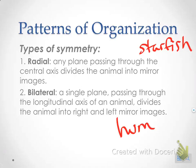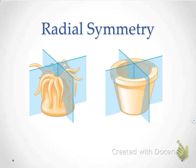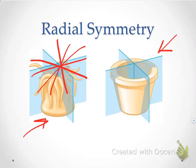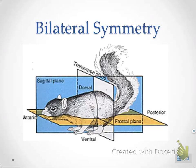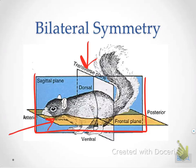Here's an example of radial symmetry — this is a sea anemone. It has symmetry no matter which way you divide it; you could divide it here, here, or here — any way you divide it, you get symmetry. Bilateral symmetry, on the other hand, is where you can only divide it in one direction and have equal halves. If you divide this organism horizontally or at an angle, the halves aren't the same. The only way to divide it equally is right down the middle.